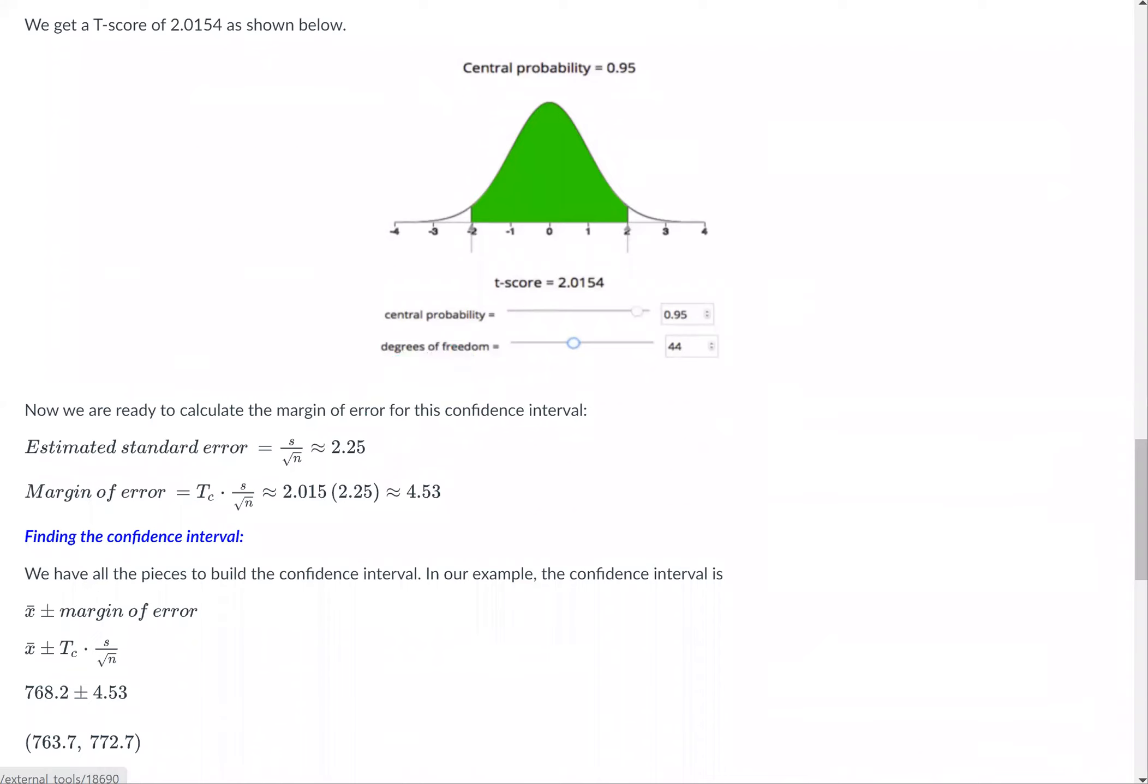Now we are ready to calculate the margin of error for this confidence interval. Estimated standard error, s over the square root of n, we already calculated as 2.25. The margin of error is the t-score times s over the square root of n. That's 2.015 times 2.25, we get about 4.53.